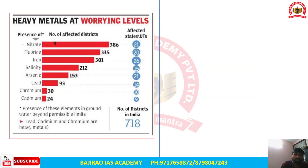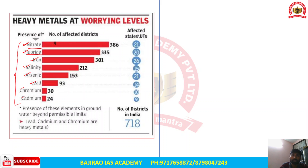The contaminants in India's waters, in order of prevalence, include: nitrate (highest), fluoride, iron, salinity, arsenic, lead, chromium, and cadmium. Lead, cadmium, and chromium are considered heavy metals in groundwater. The presence of these elements beyond permissible levels is found in a number of districts across India. UPSC may ask questions about these groundwater pollutants.